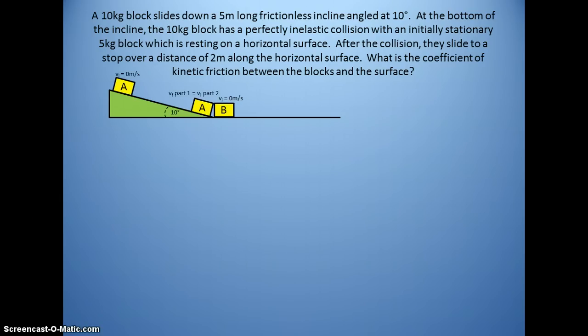Object A will slide down the incline and the VF of part one, which is the incline, becomes VI for the collision, which is part two. After the collision, they are connected together, because it is a perfectly inelastic collision. They slide to a stop over a distance. So part one is simply the incline. Part two is the collision, and part three is the skid.